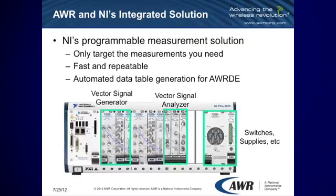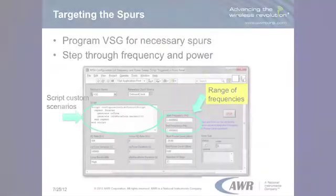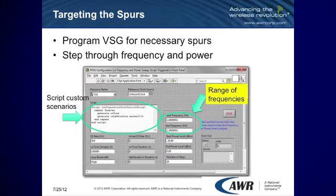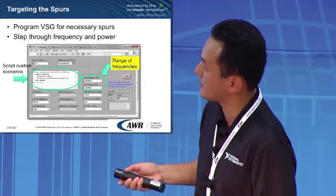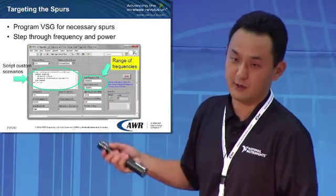One way to do this with NI hardware is the modular instrument structure. In this case, I'm showing two signal generators on the left, a signal analyzer in the middle, and some switches. You can generate two signals for your input to the mixer, and use the switches to switch in and out different components for your different measurement points. This allows a much more compact measurement system, and you can fully automate this through LabVIEW software. On the generation side, you can specify and program the range of frequency you want to test — certain harmonics or spurs — and set those frequencies in the front panel and script custom scenarios.